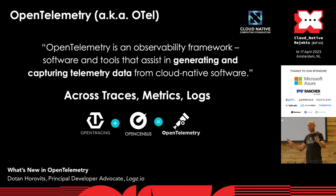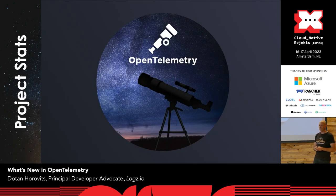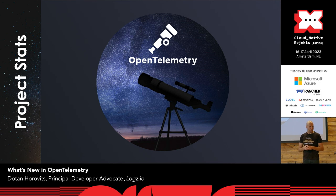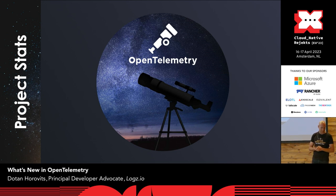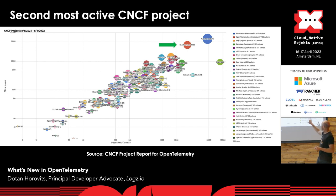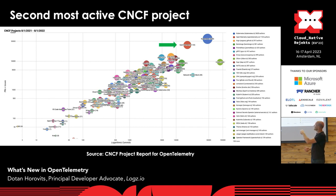Now let's talk about what's new — starting with adoption and activity. There's a fascinating report being published this week, promised by CNCF's CTO Chris Aniszczyk, about OpenTelemetry's project journey since 2019 until today. The most impressive finding: OpenTelemetry is today the second most active project in the CNCF — the first being Kubernetes itself. You can see this in the visualization, where the blue circle is Kubernetes and the red one is OpenTelemetry. Very impressive.